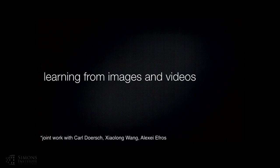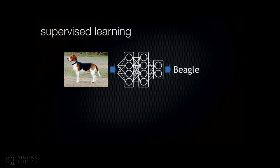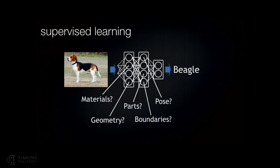Let me start from the first part, where we are trying to learn from images and videos in a self-supervised manner. We all know how current supervised learning works: you take an image, feed it through a deep network, and try to predict a label. For example, the label you are trying to predict is Beagle. Your hope is that by doing this task, you are learning a representation that can factorize materials, geometry, parts, and so on — and that same representation can be used for object detection, semantic scene segmentation, estimating geometry, and so on.